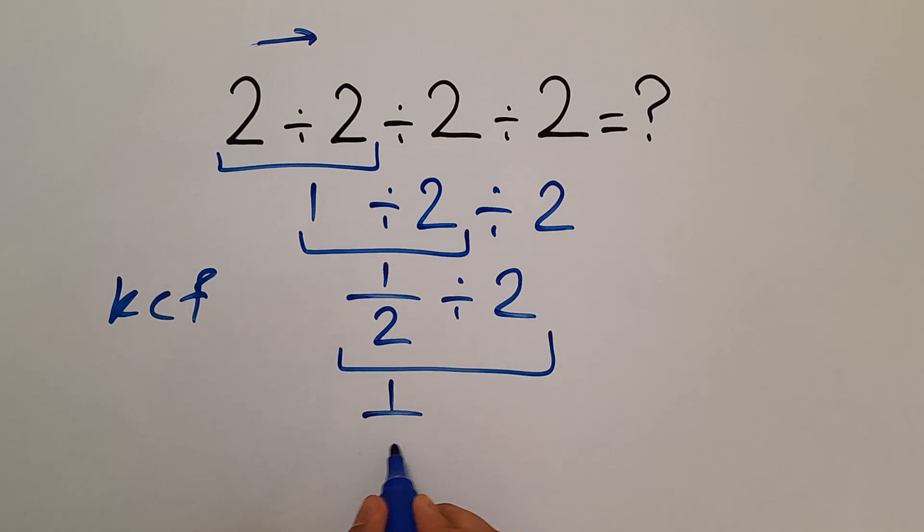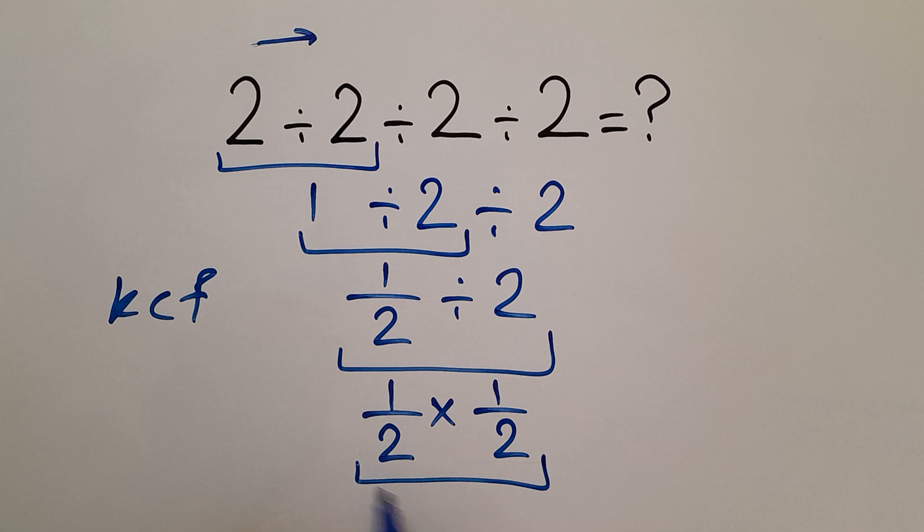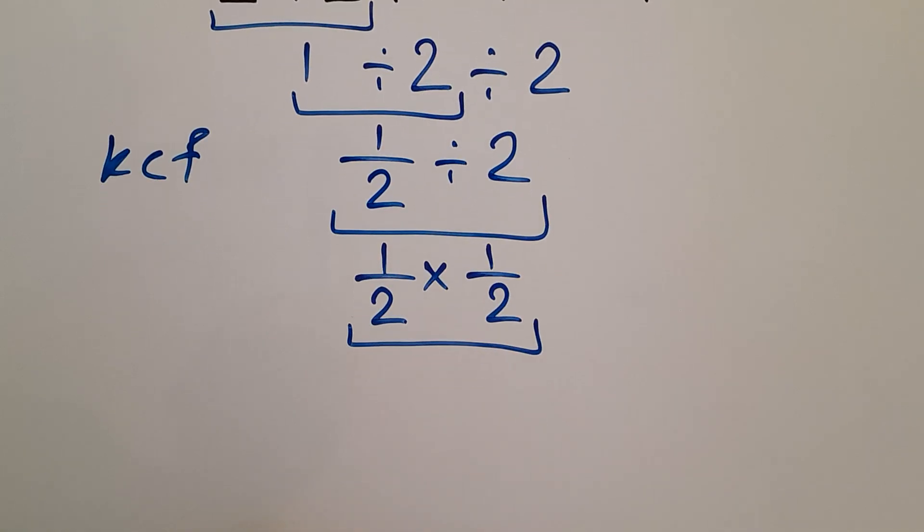as 1 over 2 times 1 over 2, and this is equal to 1 over 2 times 2 equals 4. So our final answer to this problem is 1 divided by 4.